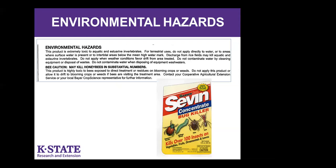Now switching gears from personal safety to the environment. Sevin insecticide is commonly used in our gardens around our homes. If you read the environmental hazards section, this product may kill honeybees in substantial numbers, and it tells you not to use the product or direct it toward blooming crops or weeds — and suggests you contact your extension office for further information. Sevin insecticide and many products can be deadly to our pollinators. This product is also extremely toxic to aquatic and estuarine invertebrates. You need to read the label, be aware of the restrictions, and adhere to them.